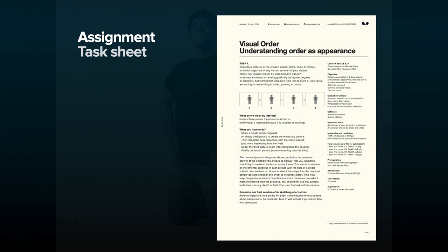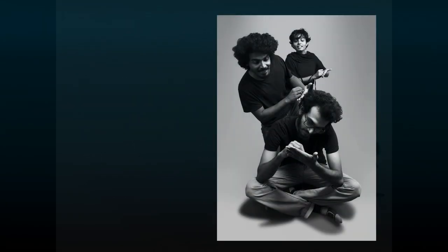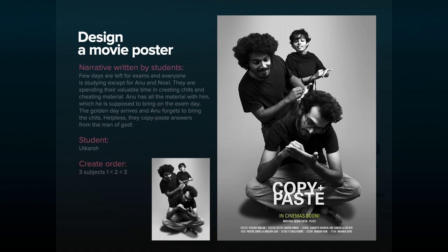The assignment is a task sheet describing course tasks, evaluation criteria, and learning outcomes. The result of the tasks allows us to decode the importance of order and disorder in arrangements. On completion of the assignment in the task sheet, the theory you learnt is put into practice by its application in a context.